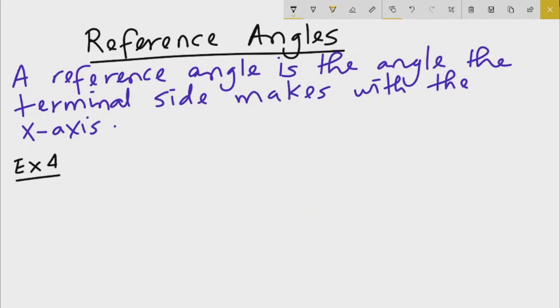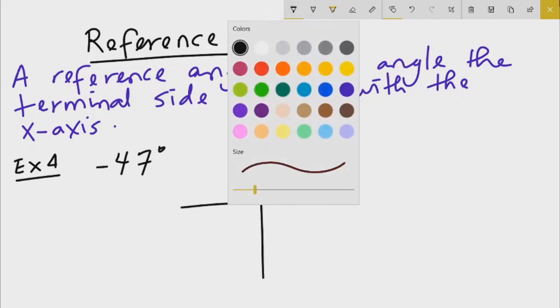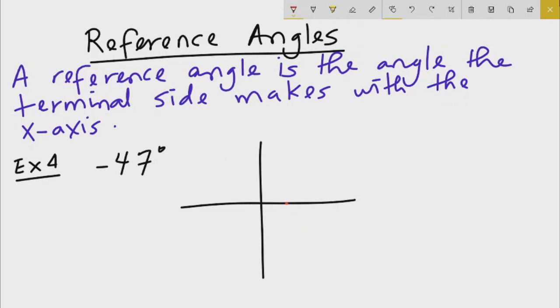Example 4: Find the reference angle of negative 47 degrees. For negative 47 degrees, we start on the positive x-axis and go in the clockwise direction for negative angles. That's our negative 47 degrees. To find the reference angle, the angle theta with the x-axis would just be 47 degrees. That's our reference angle.